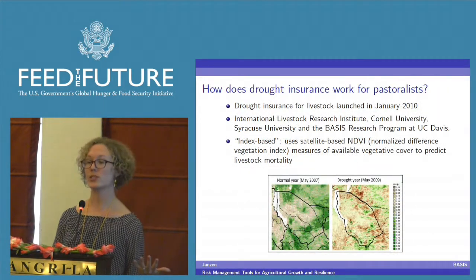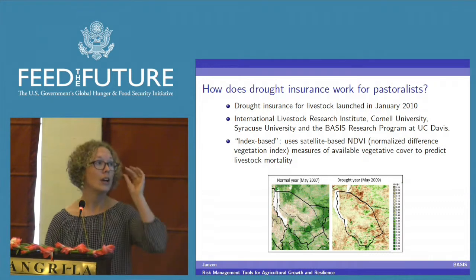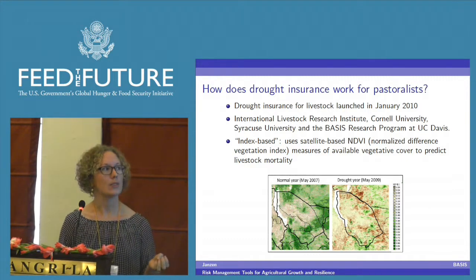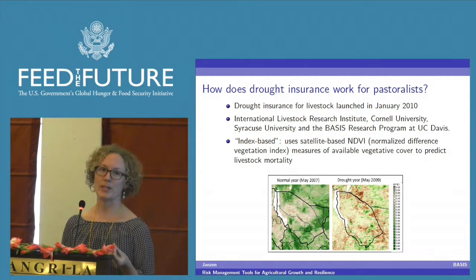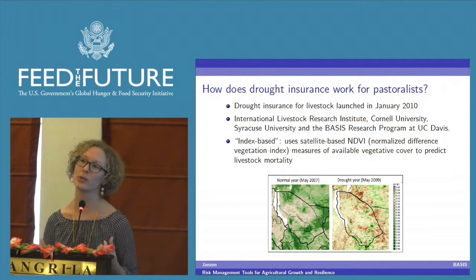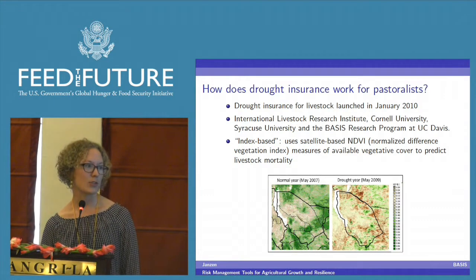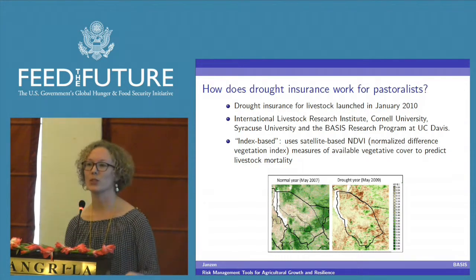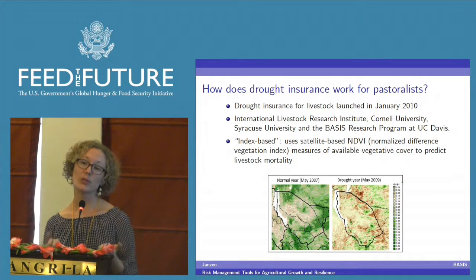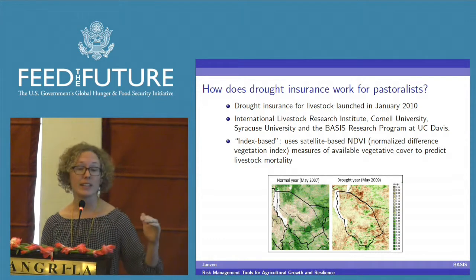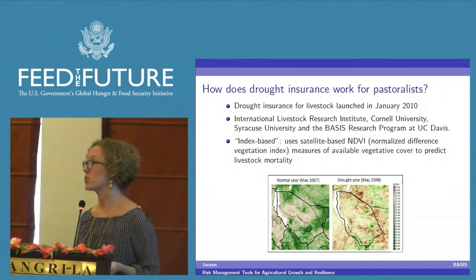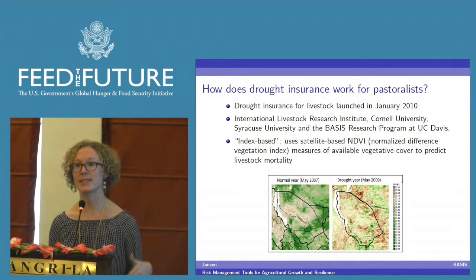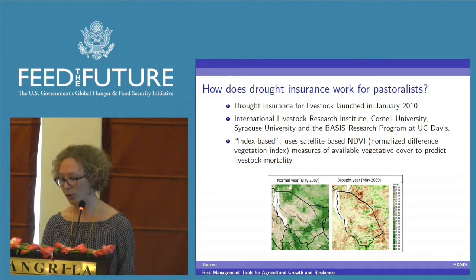How does drought insurance for pastoralists work? This is a research collaboration through ILRI, Cornell, Syracuse University, and the BASIS Research Program at UC Davis. The insurance contract is an index-based contract using satellite-based NDVI — Normalized Difference Vegetation Index. We use it to predict actual livestock mortality on the ground. Provided the index is strongly correlated with livestock mortality, which we've shown it is, it's a cost-effective way to provide insurance and minimize moral hazard and adverse selection.